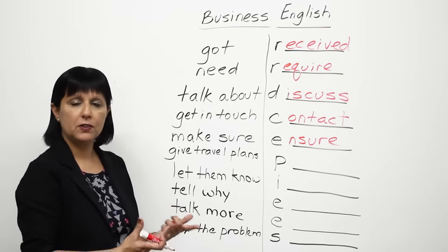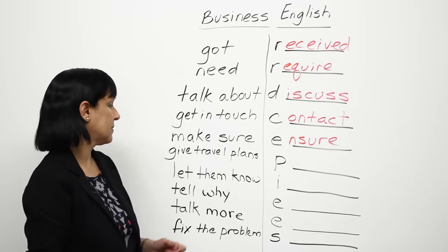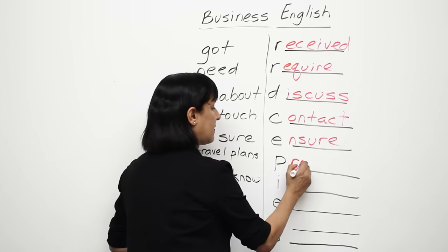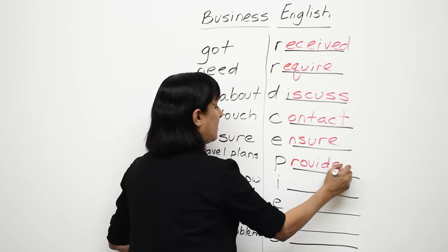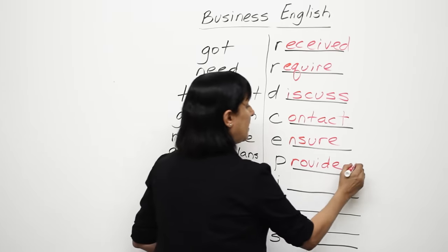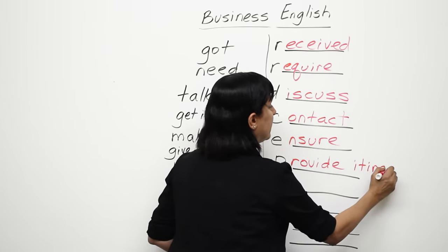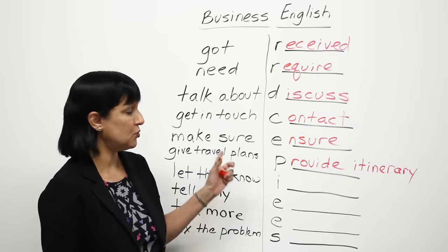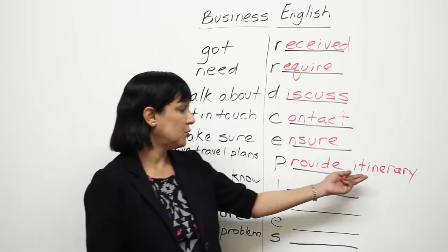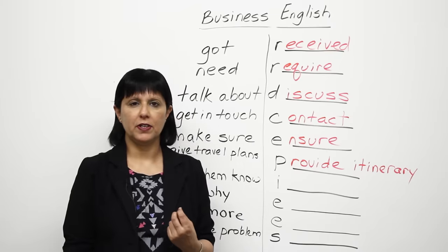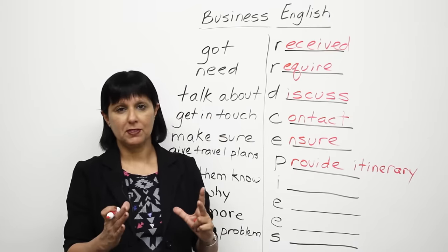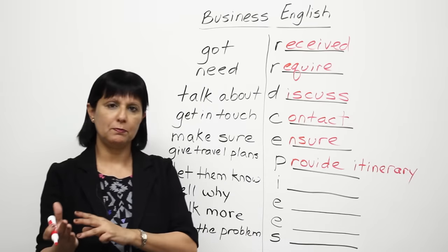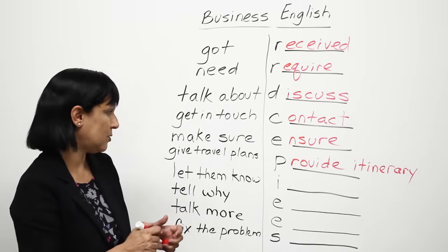'Please give her your travel plans.' Instead of saying 'give,' you could say: 'Please provide her with your itinerary.' There we've changed another word — instead of saying 'travel plan' or 'travel plans,' you could use the word 'itinerary.' An itinerary is usually a piece of paper or a document that lists your travel plans: when you're departing, when you're arriving, where, when, and so on.